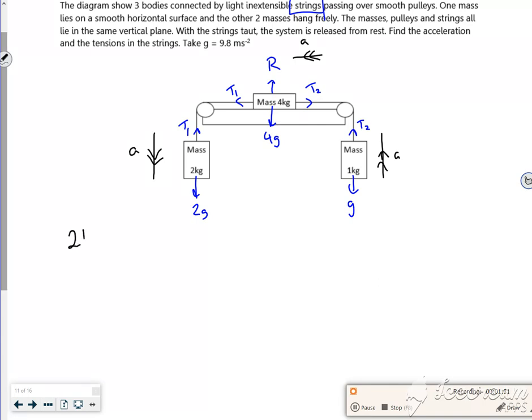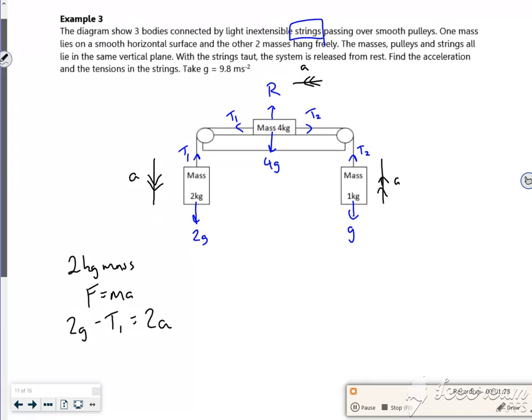So I'm going to do one for the 2kg mass. So F equals ma. So the force in the direction of travel is 2g minus T1 is equal to 2 lots of a. Am I given the acceleration at all? No.